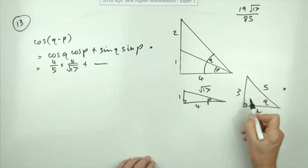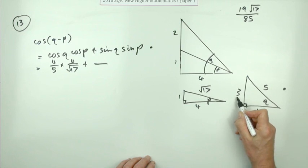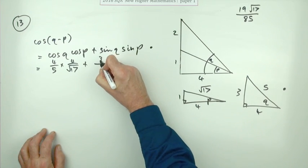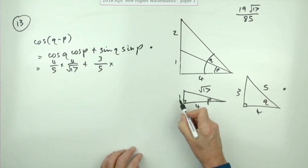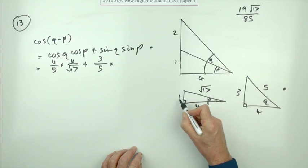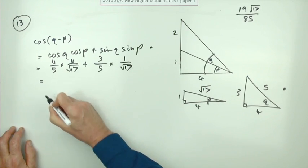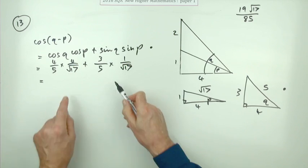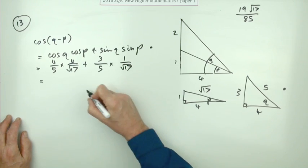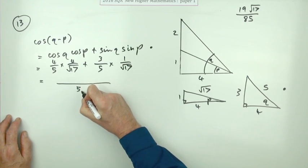Plus sine of q, the sine is opposite the angle so that's 3 over the hypotenuse, 3/5. The sine of p is opposite the angle, so that's 1 over the hypotenuse, which is 1 upon √17. Don't try and do any cancelling because you want to keep the denominators the same, so they're both over 5√17.